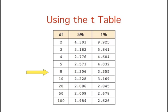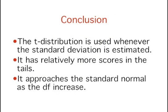As a side note, you may be wondering what is so special about the 5% value. As you'll see in a later section, this is a conventional value used in inferential statistics. In conclusion, the t-distribution is used in place of the normal distribution whenever the standard deviation is estimated. Its shape is similar to the normal distribution but has more scores in its tails. As the degrees of freedom increase, the t-distribution becomes more similar to the standard normal distribution.